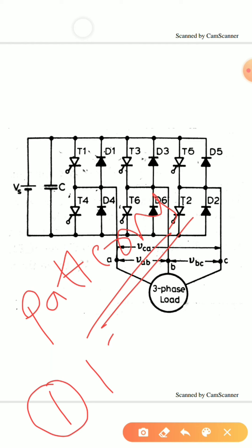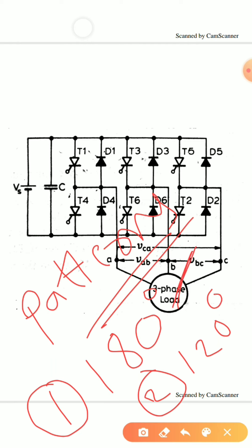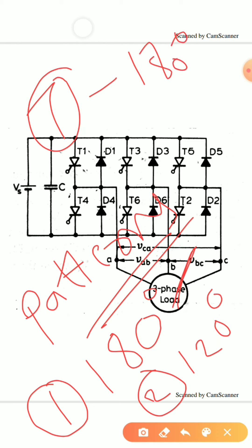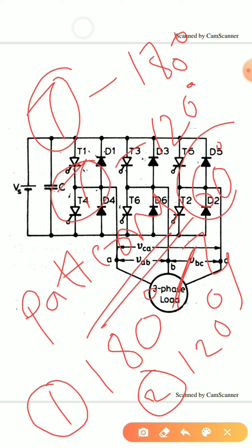In the first pattern there will be 180 degree mode conduction, and in the second pattern it is 120 degree mode conduction. In 180 degree mode conduction, every thyristor will conduct for 180 degrees — if I am turning on thyristor T1 at 0 degrees, it will turn off at omega-t equal to 180 degrees. In 120 degree mode, T1 turns on at omega-t equal to 0 and turns off at omega-t equal to 120 degrees. In both modes, a 60 degree interval is followed — after every 60 degrees a new thyristor will turn on.